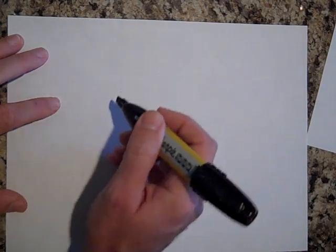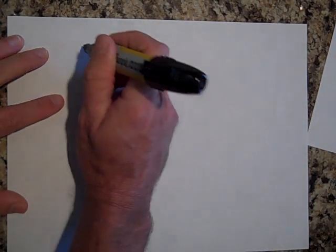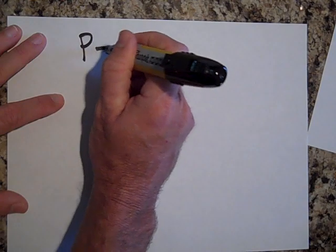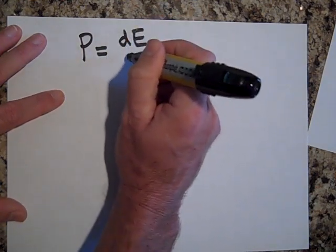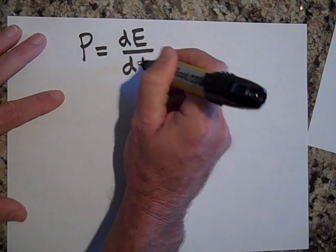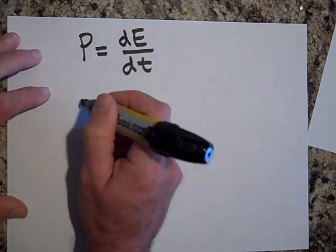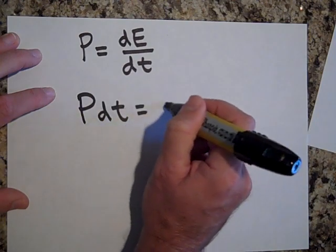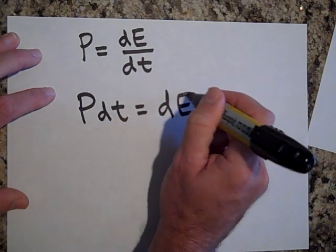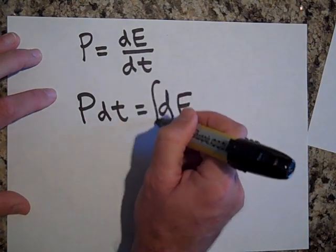Let me show you why that's the case. If power equals dE/dt, if I bring the dt on the other side and I integrate both sides, then when I add up all the energies that just gives me the total energy.